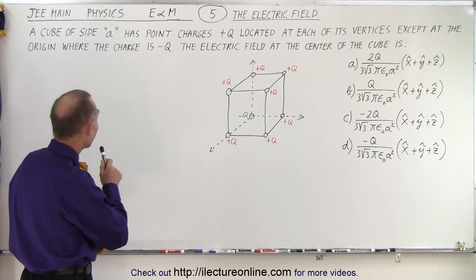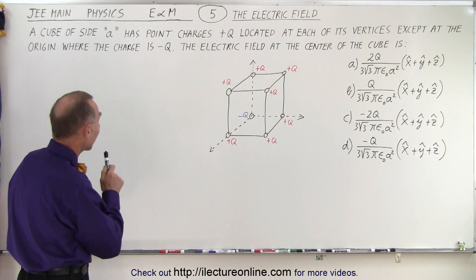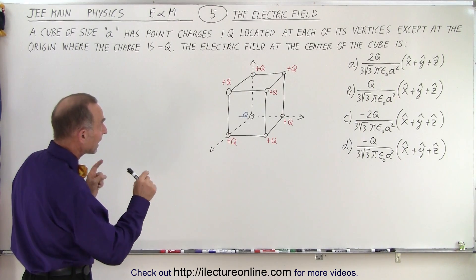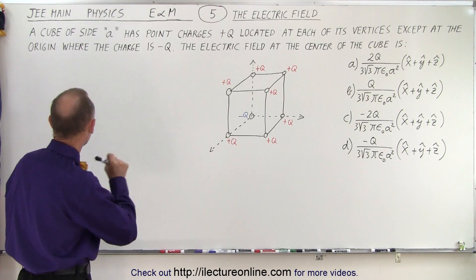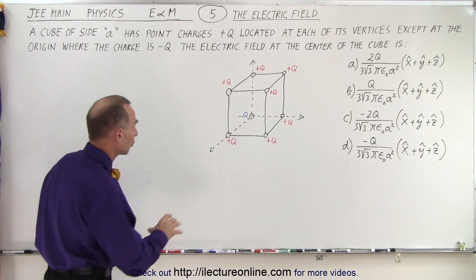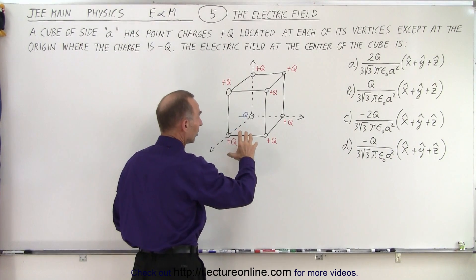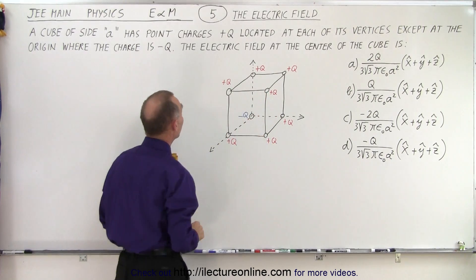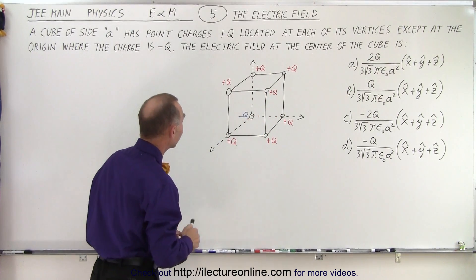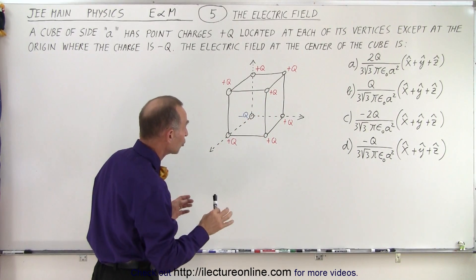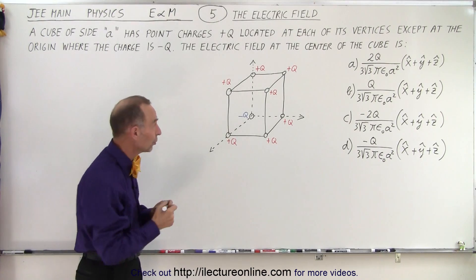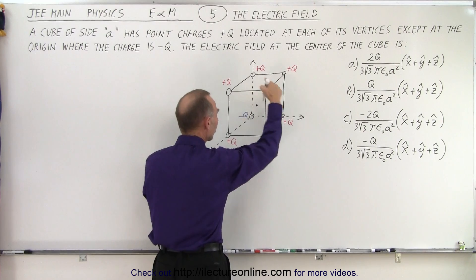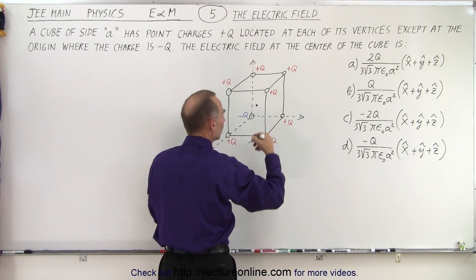We have a cube of side A. It has point charges plus Q located at each of the vertices except at the origin, where the charge is minus Q. So there's a total of eight charges — seven of them are plus Q and the one at the origin is minus Q. The electric field at the center of the cube is what we're trying to find — the electric field right at the halfway point in all directions from each corner.